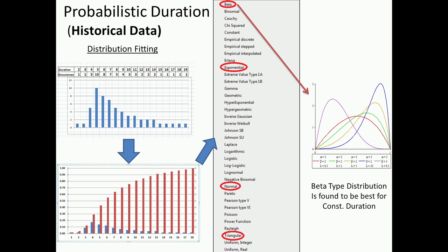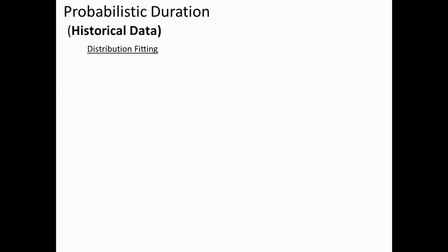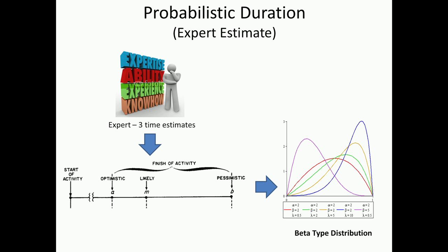Now this would be nice to be able to do, but certainly there is an overhead when we try to do it from a data perspective. So the other option is to go with an expert estimate. In this particular case, I get an expert, and I cannot get this level of data from an expert, but I will be able to at least get three times - what is an optimistic time, what is a likely time, what is a pessimistic time. And based on this, again there are several distributions - I could use a triangular distribution here too, but again what we will find is that a beta distribution has been used to model this kind of expert estimate also.